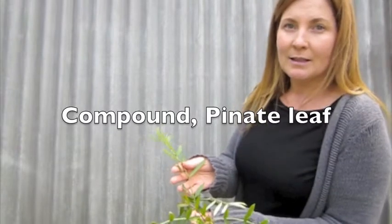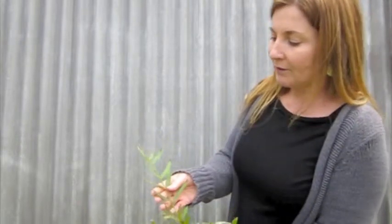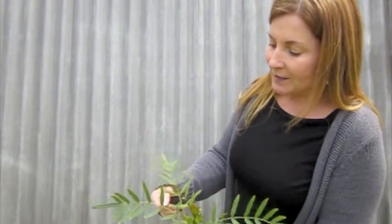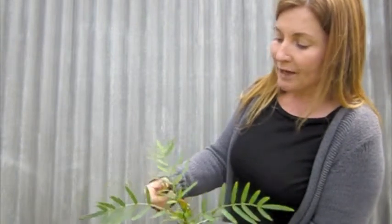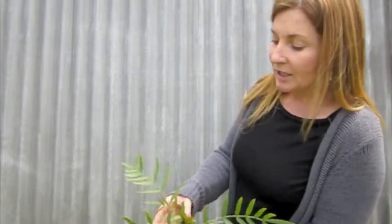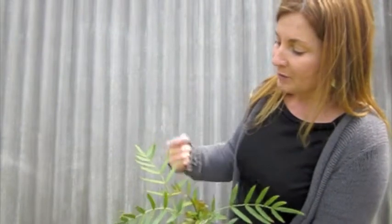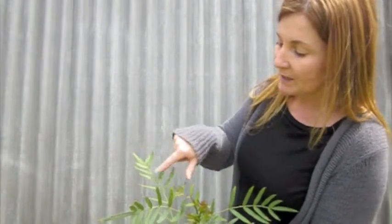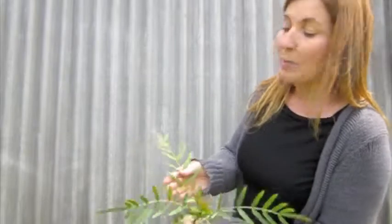This dicotyledon has a compound leaf. So the leaflets have arranged themselves around the primary lateral veins. Originally this entire leaf would have been a simple leaflet, with this being the central vein. This is a pinnate leaf.